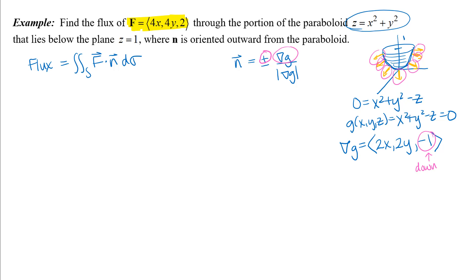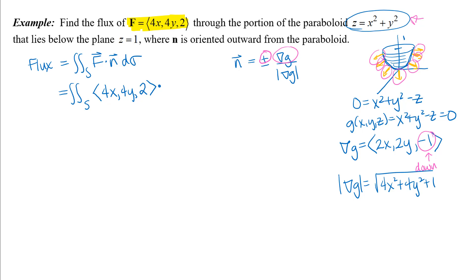Notice that if I had chosen my algebra a little differently — if I had subtracted X squared and Y squared instead of subtracting Z from both sides — I would have opposite signs in my gradient vector and would need to choose negative to turn that around. Then I need the magnitude of my gradient vector. I'll go ahead and set up some parts of my surface integral. A surface integral is going to eventually turn into a double integral. I'm going to write my F dot N — my N was my gradient vector divided by its magnitude — and then my differential D sigma.